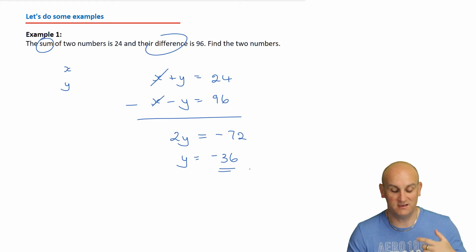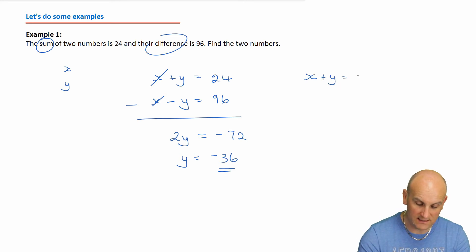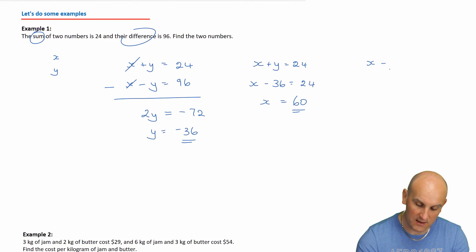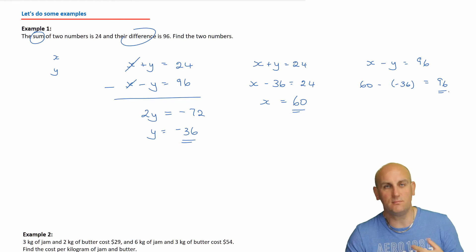What do I do now? Well I'm going to substitute that in. I've got x plus y equals 24. So I know y is negative 36. x minus 36 equals 24, so add 36 to both sides gives me 60. So there's my numbers: minus 36 and 60. Let's just check and say, is x minus y equal to 96? Well x is 60 minus minus 36 just so happens to be 96. Job done.